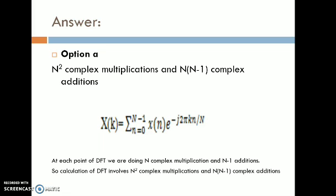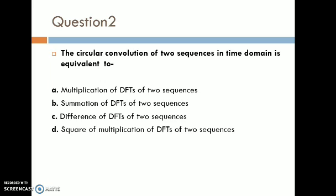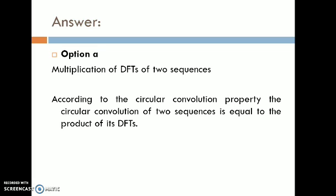The next question: the circular convolution of two sequences in time domain is equivalent to — by reading the question itself, we understand it is related to a DFT property. The options are: A) multiplication of DFT of two sequences; B) summation of DFT of two sequences; C) difference of DFT of two sequences; D) square of multiplication of DFT of two sequences. The answer is option A: multiplication of DFT of two sequences. According to the circular convolution property, circular convolution of two sequences equals the product of their DFTs.